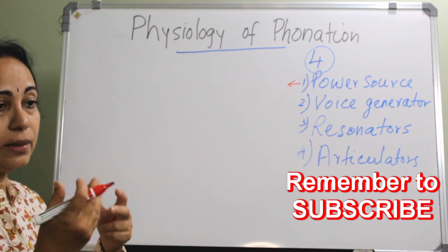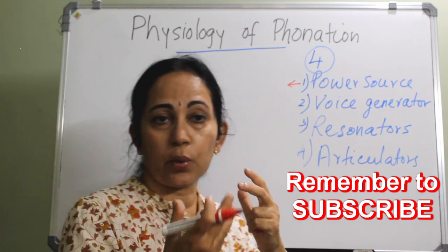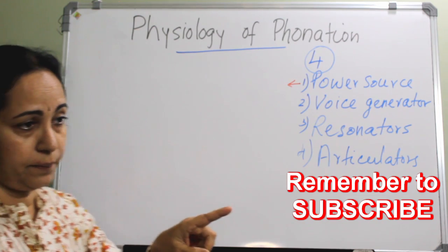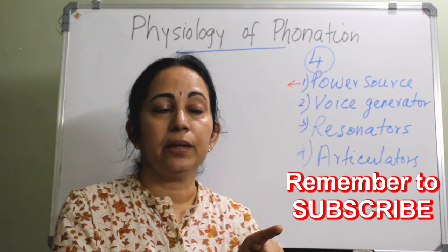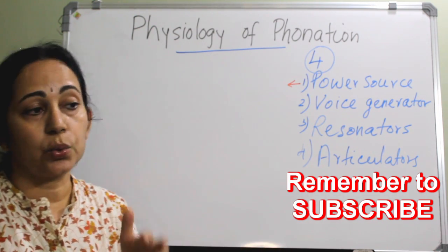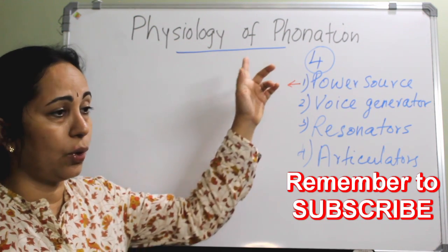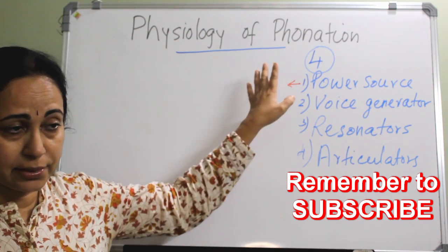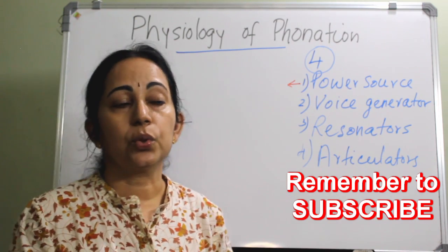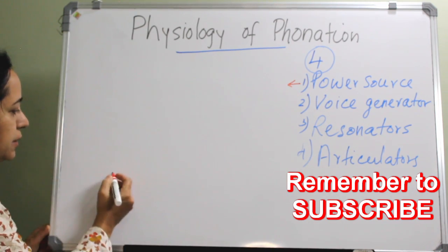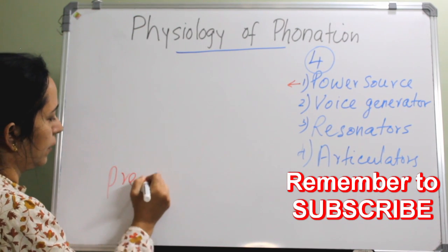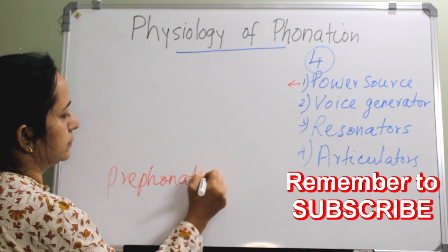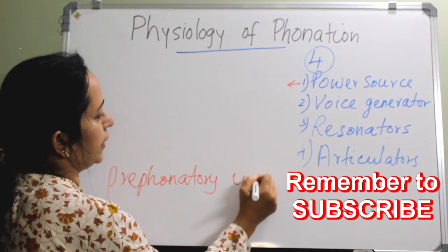Immediately before sound production, towards the end of inspiration, the vocal cords will abduct — abduction is mainly by the posterior cricoarytenoid. See the video on anatomy of larynx and anatomy of vocal folds for more detail. So towards the end of inspiration there is a pre-phonatory inspiratory phase.